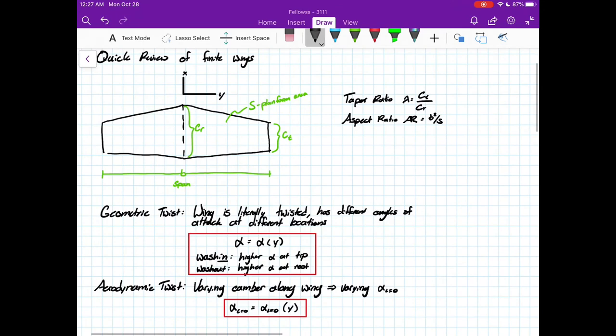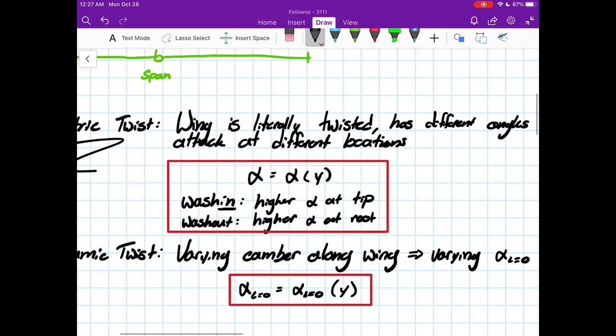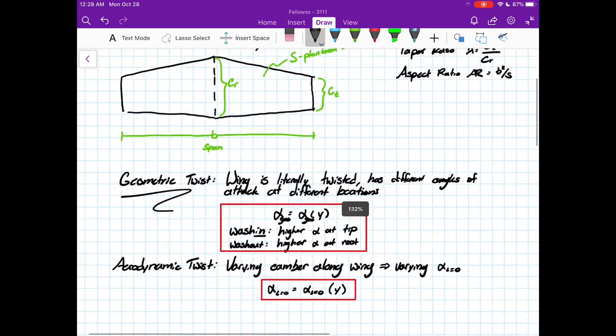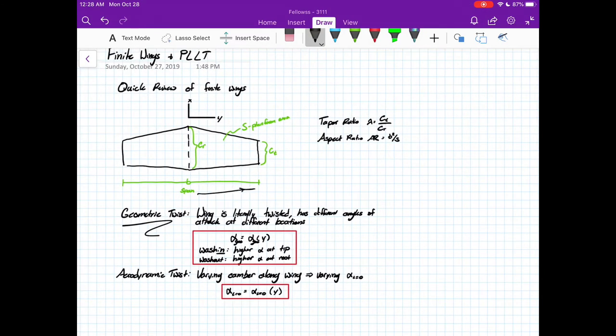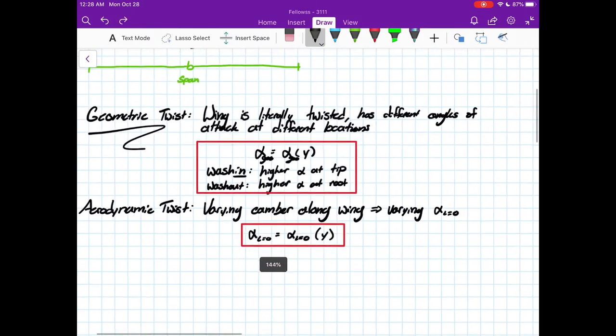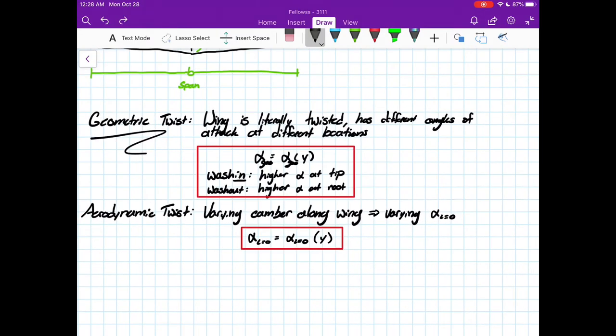We're even saying they can have geometric twist, where the wing is literally twisted. There is a different physical angle of attack at different places in the wing. So I've written alpha geo - alpha geo is a function of the spanwise direction y, can change with y.